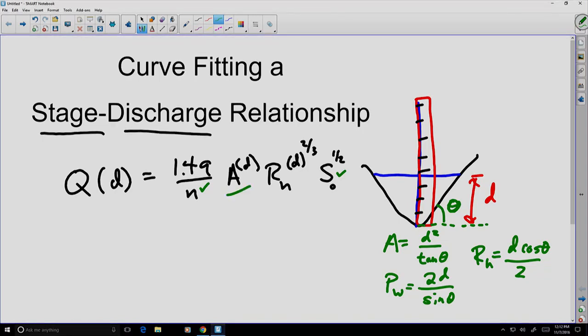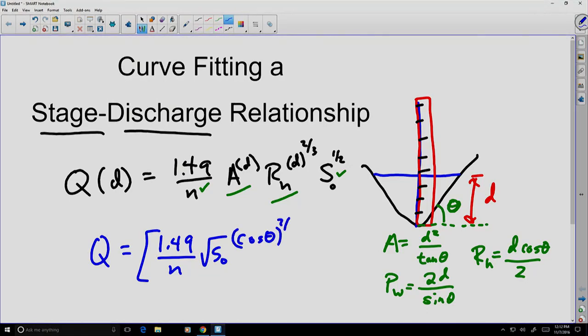So we can replace this area here in Manning's equation and the hydraulic radius and we end up with an equation for Q as a function of the depth d that basically 1.49 over n square root of s naught, the cosine of the angle to the two-thirds power, and then 2 to the two-thirds power times the tangent of the angle. All I've done here is I've gathered all the constant pieces.